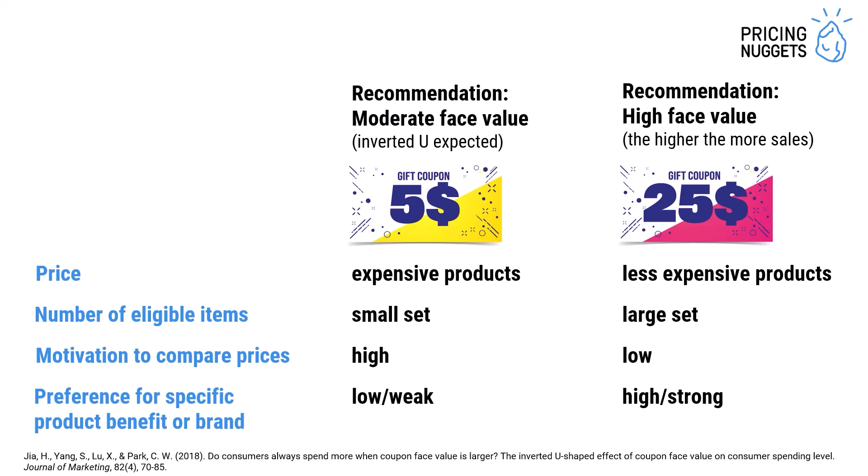The first factor is price. When customers are more likely to compare prices — and researchers concluded this is more likely for high-priced items — expensive products lend themselves more to moderate face value coupons, so increasing to a higher face value might reduce the transaction amount. For less expensive products, we expect a linear relationship: the higher the coupon, the more sales we expect.